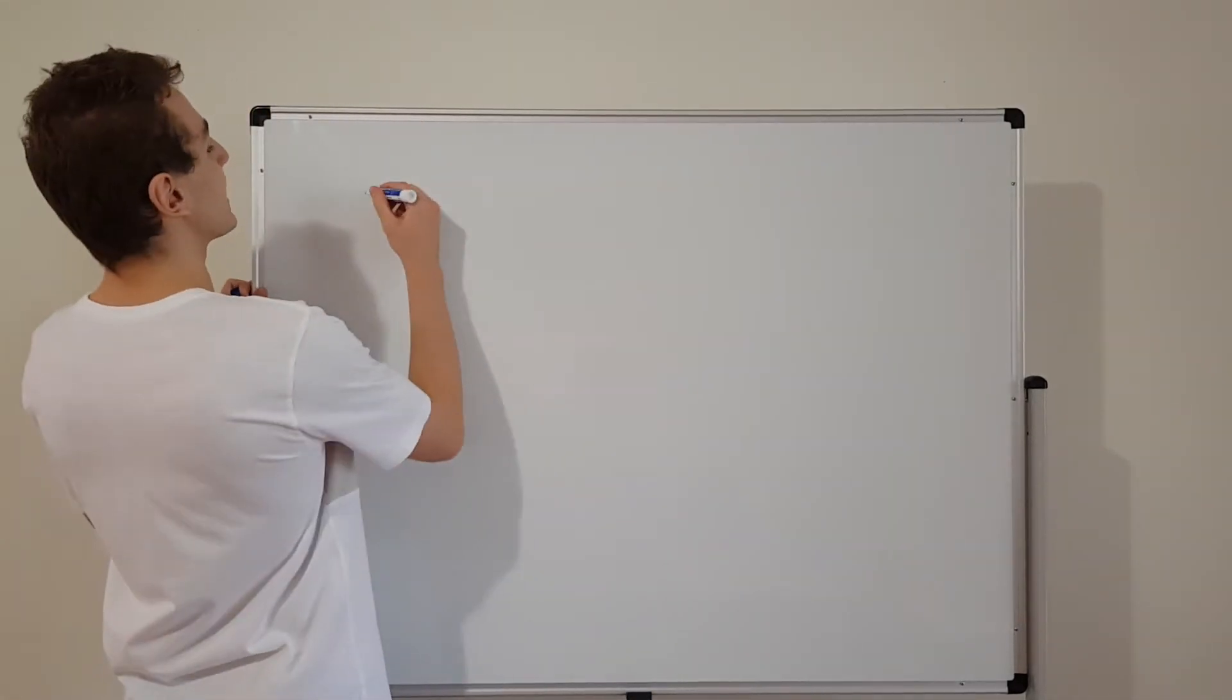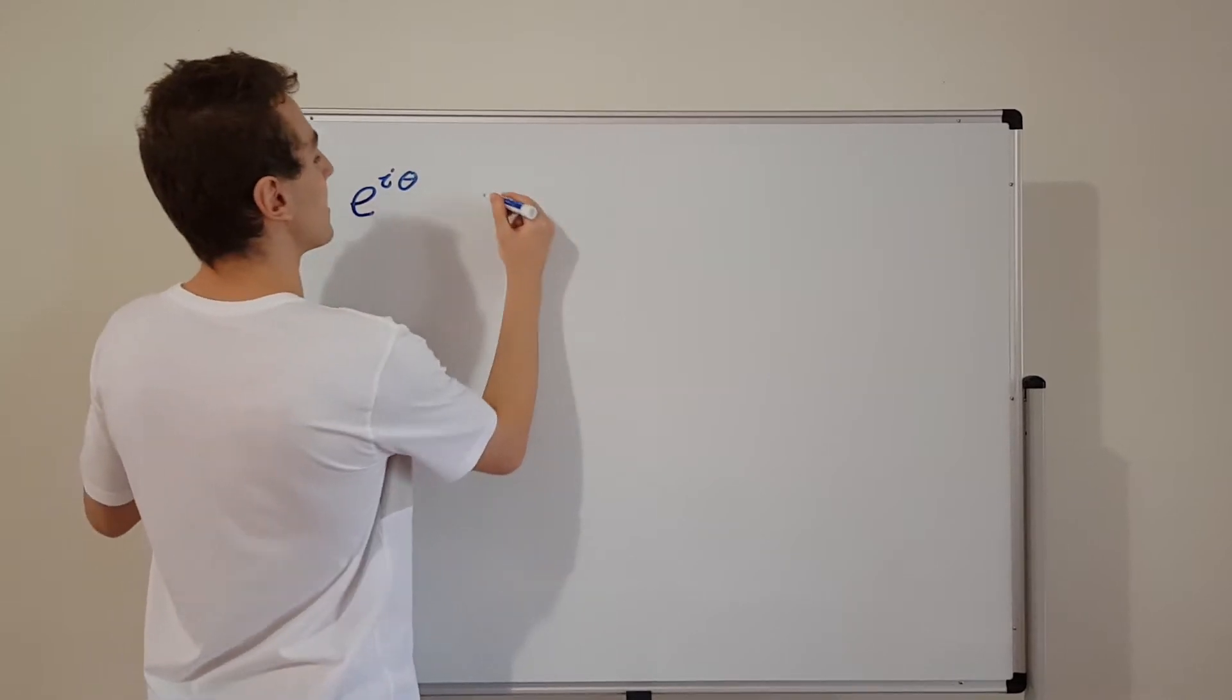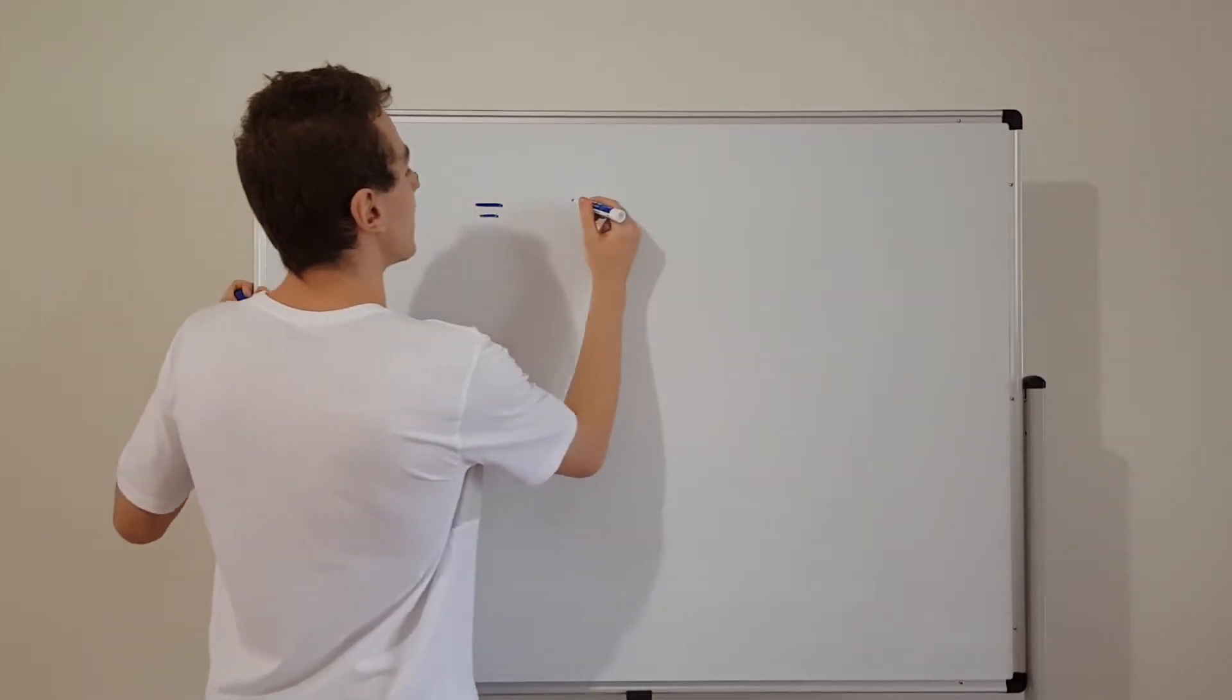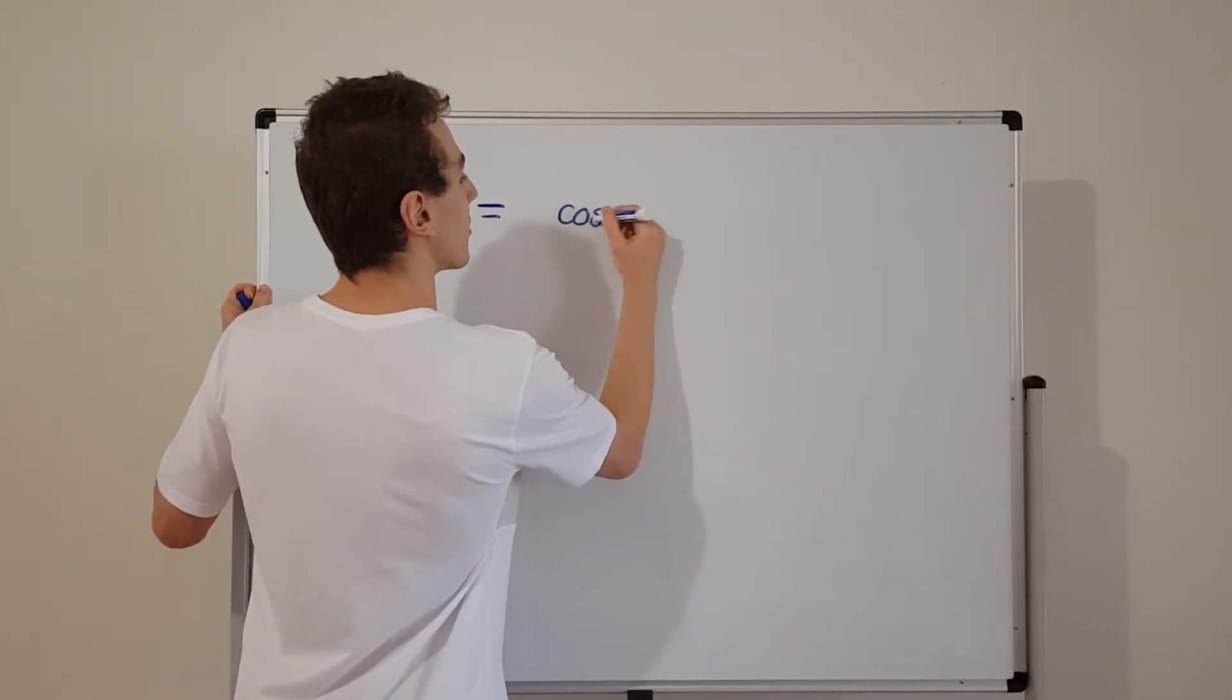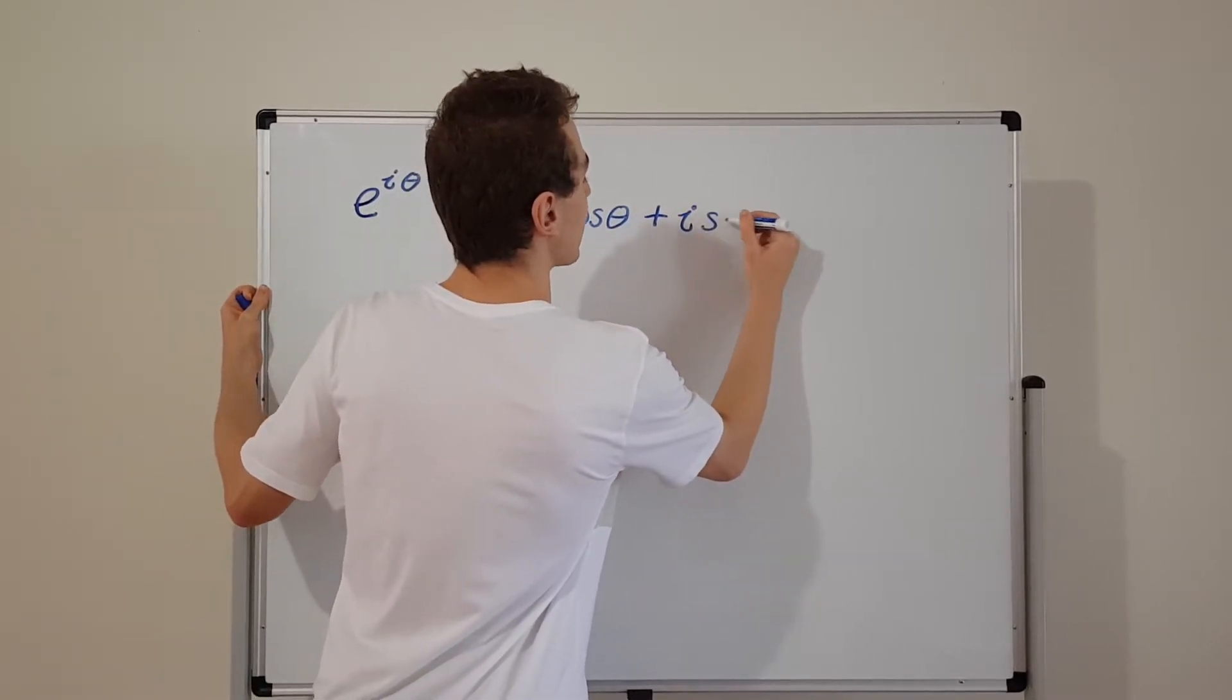So the left hand side is going to be e to the i theta and the right hand side is going to be cosine of theta plus i sine of theta.